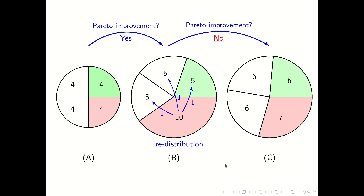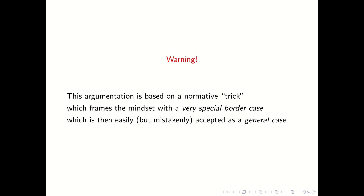Perhaps you know this example from textbooks, but I would like to raise a warning sign. The argumentation here is based on a normative trick, which frames the mindset with a very special border case about the assumptions of the underlying preferences. This is then very easily but mistakenly accepted as a very general insight of economics. Let us go into the details.